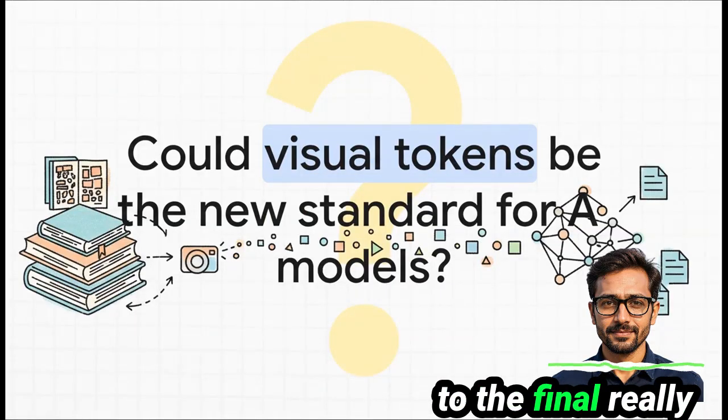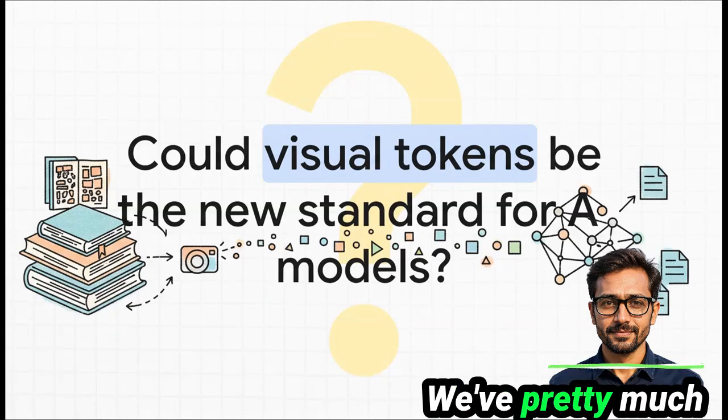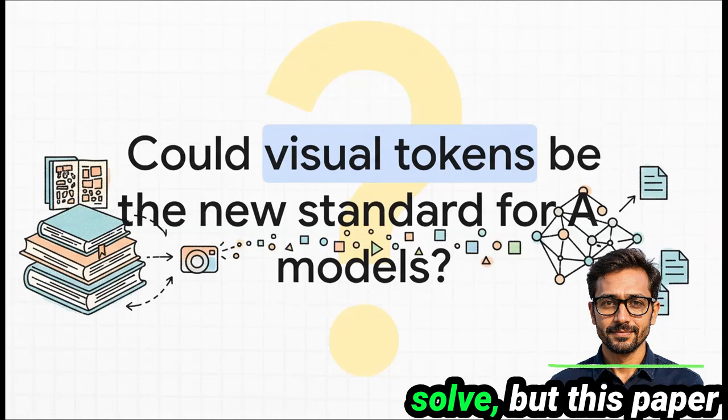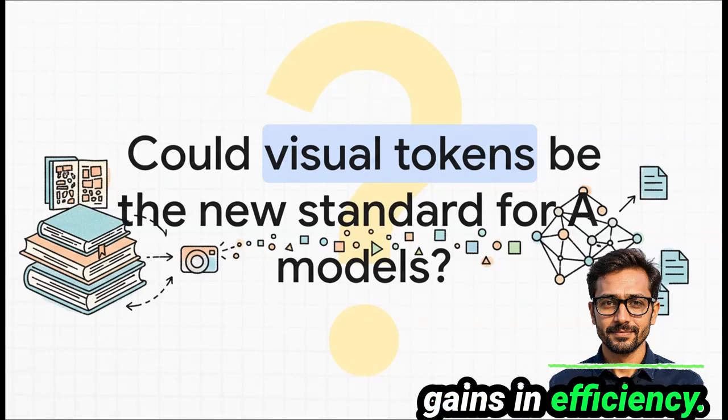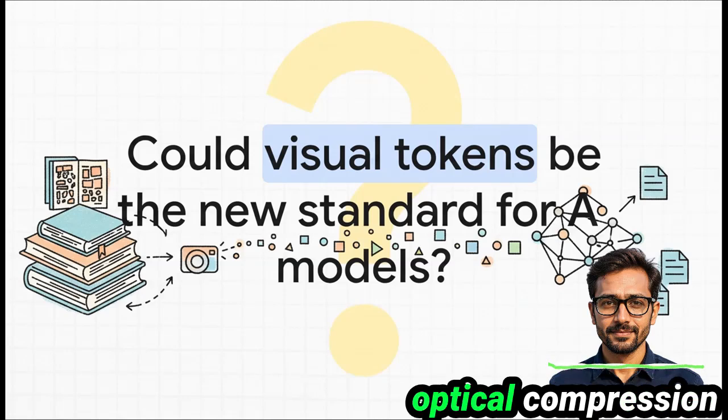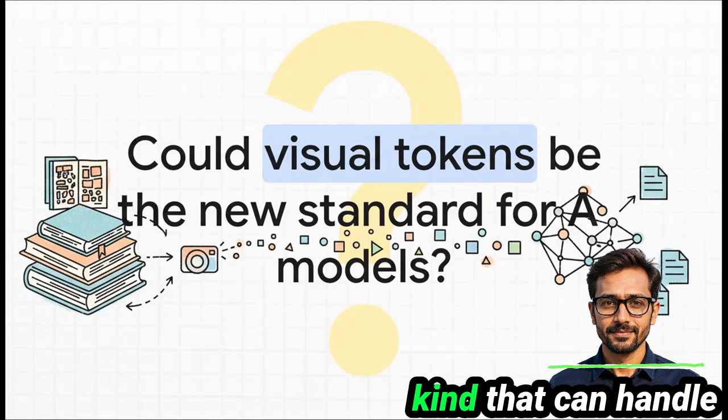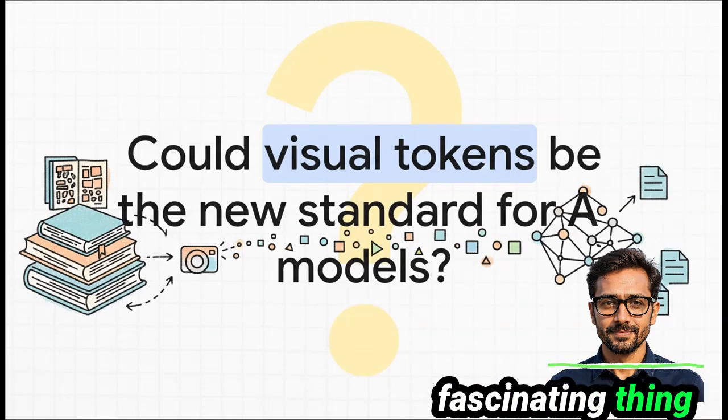And that brings us to the final, really big question that the researchers themselves are asking. We've pretty much always treated language and vision as two separate problems for AI to solve, but this paper proves that you can blend them together to get these huge gains in efficiency. So could this idea of optical compression be the key that unlocks the next generation of AI, the kind that can handle truly massive amounts of context? It's a pretty fascinating thing to think about.